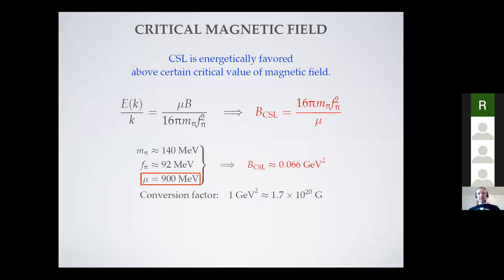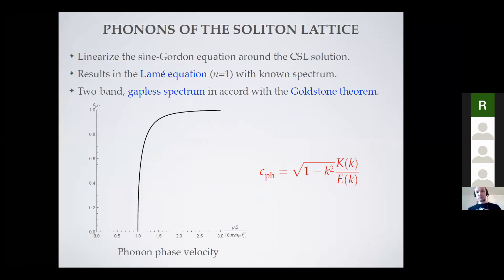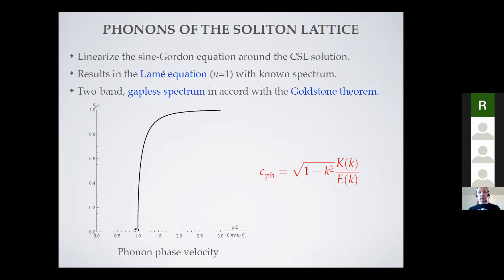Regarding excited states and collective excitations of the crystalline state: once you have a crystal, it breaks translational symmetry spontaneously, so you expect a Goldstone boson — a phonon. Indeed we find propagating phonons which are massless or gapless, even though the original pions we started with are massive. The picture here shows the phase velocity of the phonons as a function of magnetic field. At the critical field the phase velocity goes to zero, then with increasing field it quickly increases towards the speed of light.